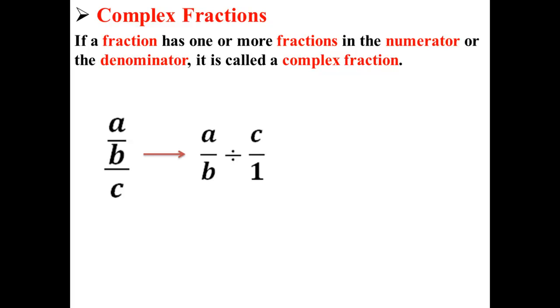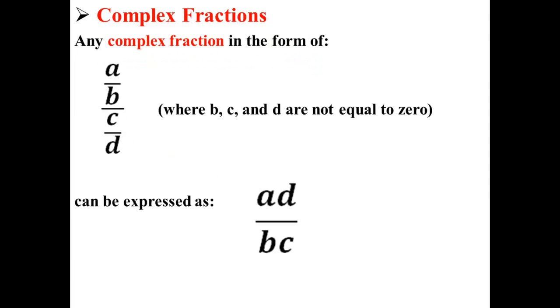This is basically the same thing as writing a over b divided by c over 1. We can make this even easier by converting it to multiplication: a over b times 1 over c equals a over bc. So our complex fraction a over b all over c is the same as writing a over bc.